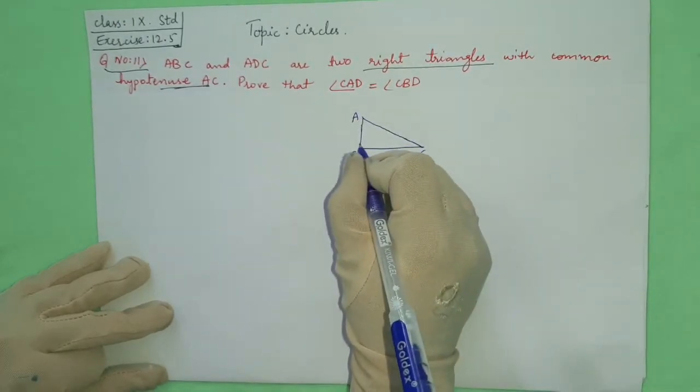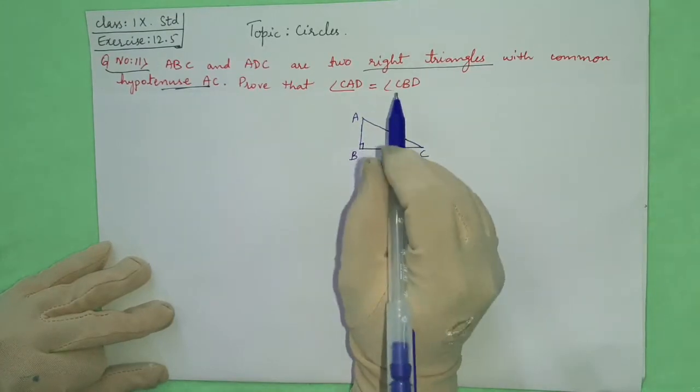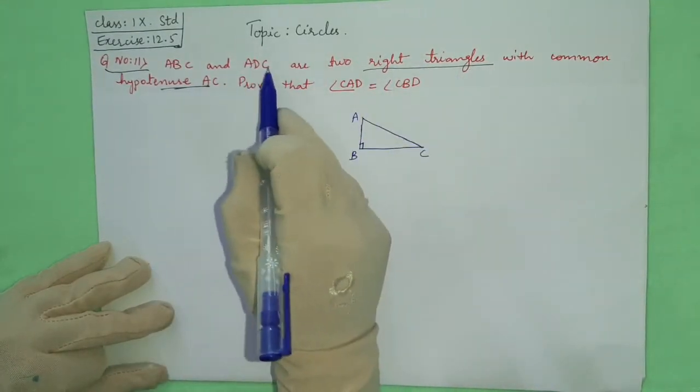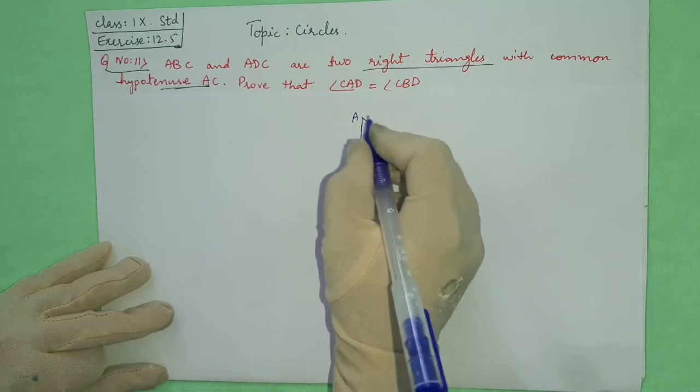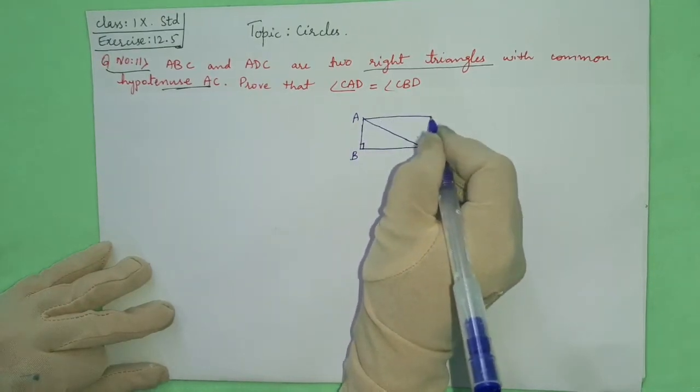AC hypotenuse means 90 degree angle at B. And the other triangle name is ADC. We have to take AC to D.